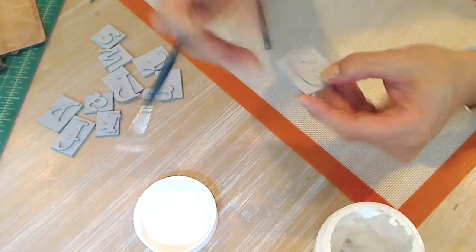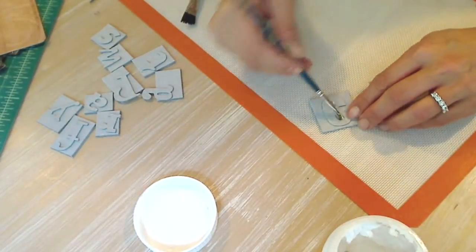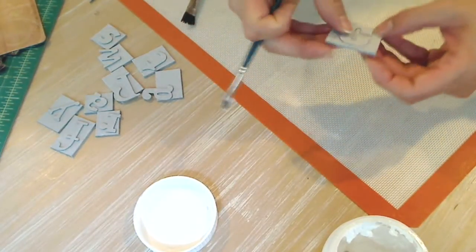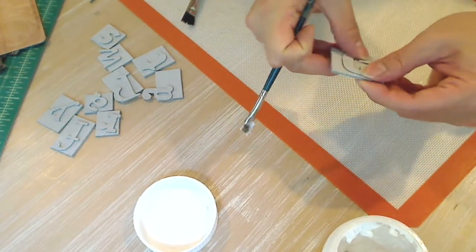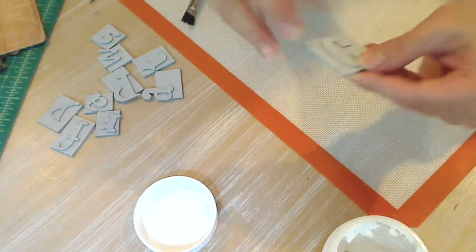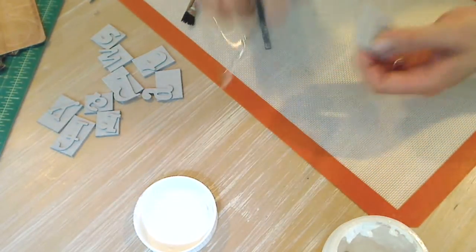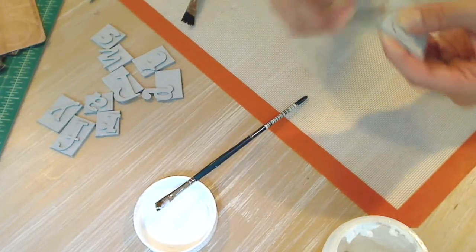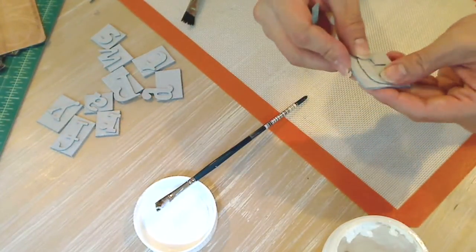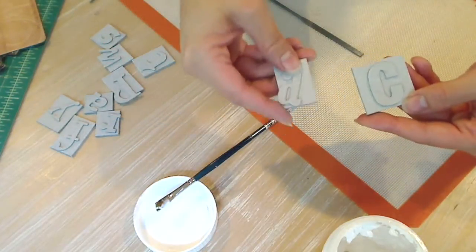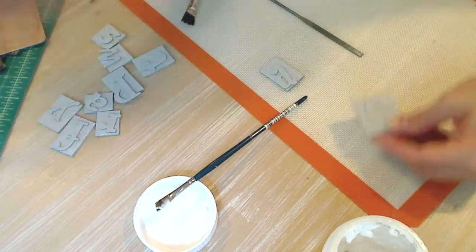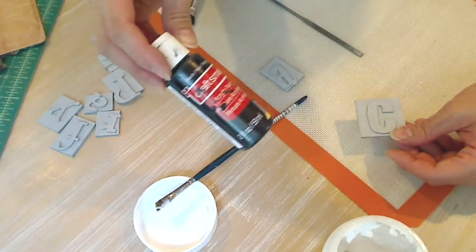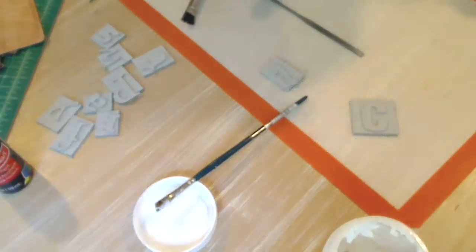And I use the gel medium particularly because I want to make sure that the inks that I use later are going to not bead off or look like they don't belong. And sometimes with certain adhesives, you will get like a shinier finish and I didn't want that. So I'll go through and adhere all of these letters together and then go ahead and paint everything with this black acrylic paint. And then I'll come back and show you the next step.